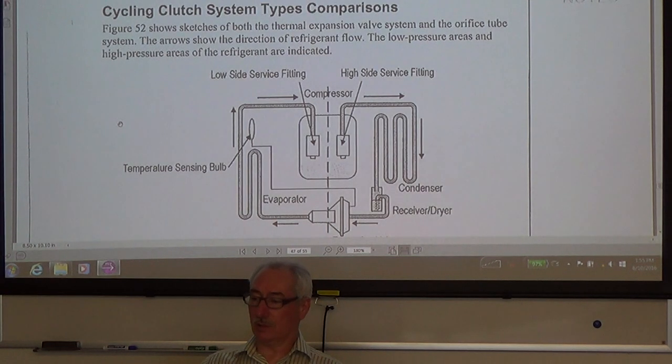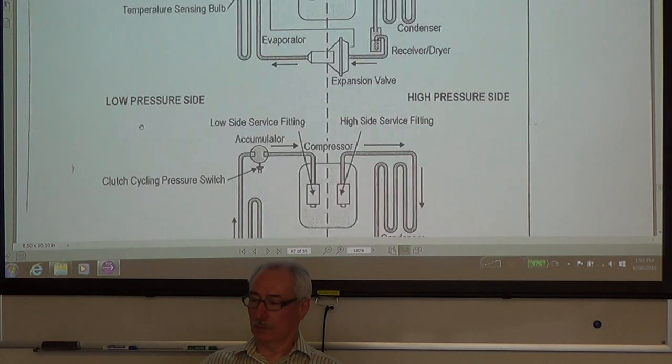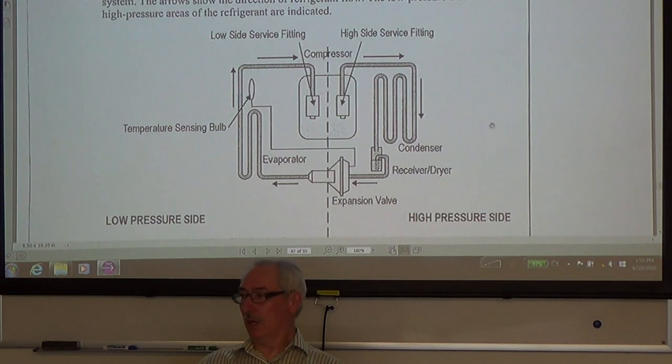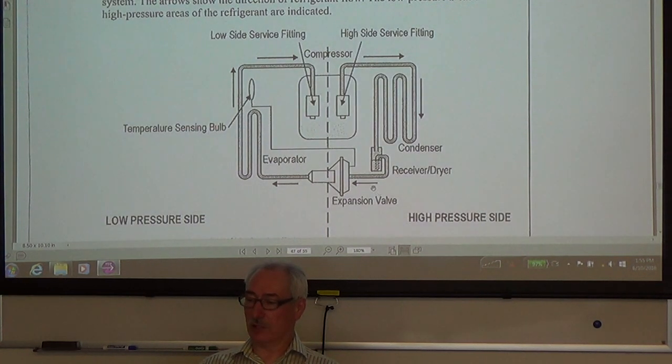Cycling clutch system type comparisons. Remember we talked about high side and low side. The dash line represents the division of the high side and low side on each system. This first one is the expansion valve system. We've got the compressor, the low side service fitting, that's our suction side. And the expansion valve is the other division. After the compressor, the high side of the compressor discharge, we've got our condenser, receiver dryer, and then the expansion valve. So everything to the right is the high side. Everything to the left is the compressor, including the evaporator is the low side.